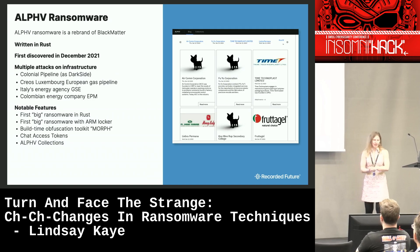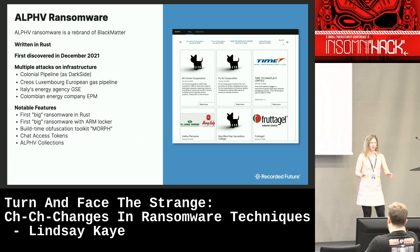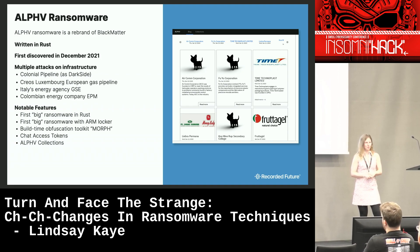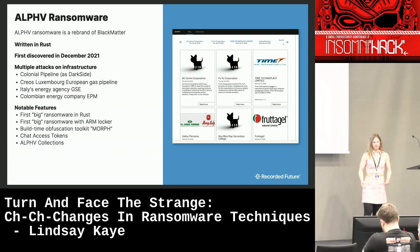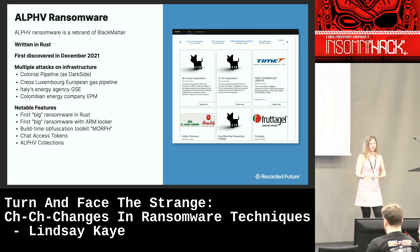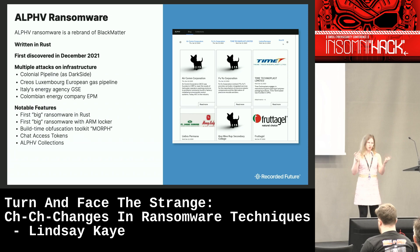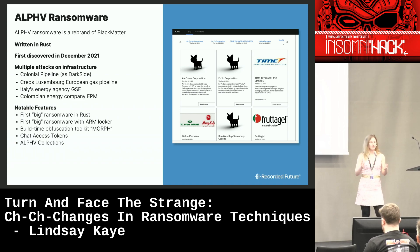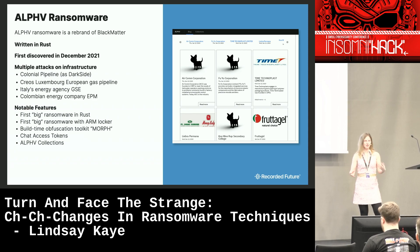Speaking of Alpha — they're a rebrand of BlackMatter. Back in the day we had DarkSide; they attacked Colonial Pipeline, got a lot of law enforcement attention, and the group ultimately disbanded. Later they re-emerged as BlackMatter, which had decryption issues — people weren't having to pay the ransom to get files decrypted, not great for business. We later saw them pop back up as Alpha, with their first ransomware observed in December 2021. They're known for attacks on infrastructure. Notable features include being the first big ransomware written in Rust, the first mainstream ARM locker, the Bill Time Obfuscation toolkit Morph, chat access tokens, and the Alpha Collections blog — a searchable victim files index.